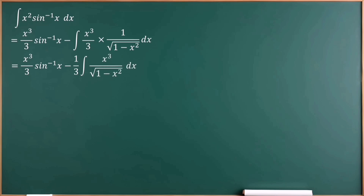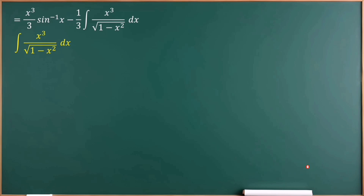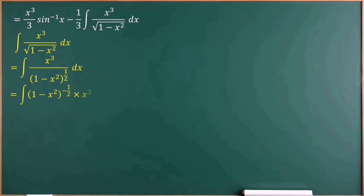Now consider the integral of x cubed over root 1 minus x squared. The denominator root 1 minus x squared can be written as (1 minus x squared) to the power of one half. Moving it to the numerator, we write it as (1 minus x squared) to the power of minus one half. Then we have the integral of (1 minus x squared) to the power of minus one half times x cubed, and we can use the integration by parts method to simplify this. We know the integral of f(x) to the power of n times f'(x) equals f(x) to the power of n plus 1 over n plus 1.